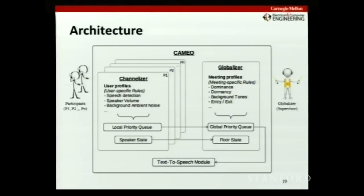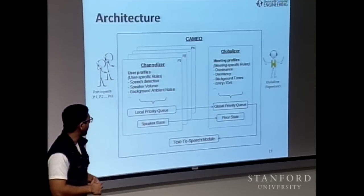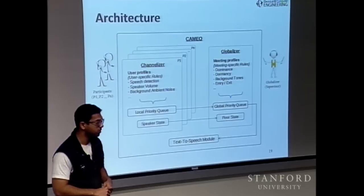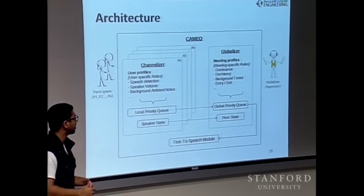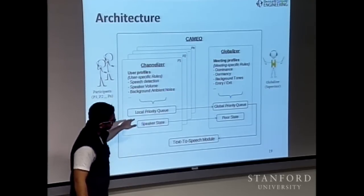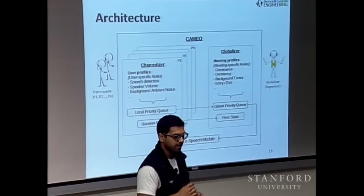A quick look at the architecture: I have participants collaborating remotely. Each participant gets their own blackboard architecture, which is a conflict resolution mechanism. Each participant gets a channelizer monitoring whether they're speaking, how loudly, and what the background noise is. There's also a blackboard for the whole meeting — the globalizer — tracking all participants: has someone entered or left? Is someone being dominant? Things get populated into a priority queue and pushed into the text-to-speech module, which is the main actuator for Cameo.